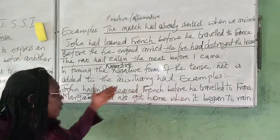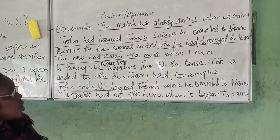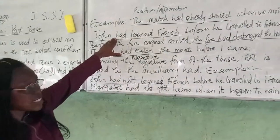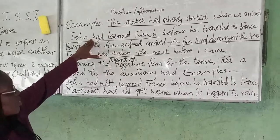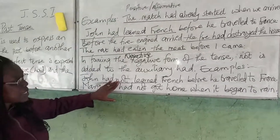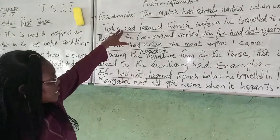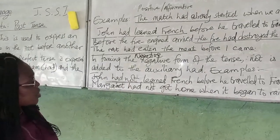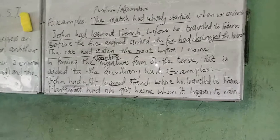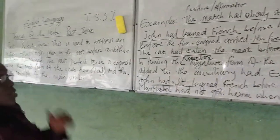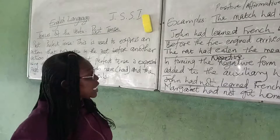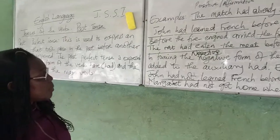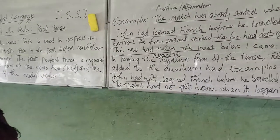In the affirmative form, the action here happened before this one. To make it negative, the action of learning French has not taken place before John traveled. This is the negative form. Please don't confuse it with the present perfect — the present perfect uses 'has' or 'have,' but the past perfect uses 'had' to make it past perfect.